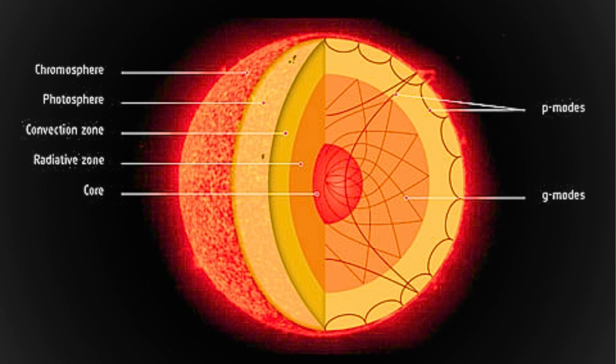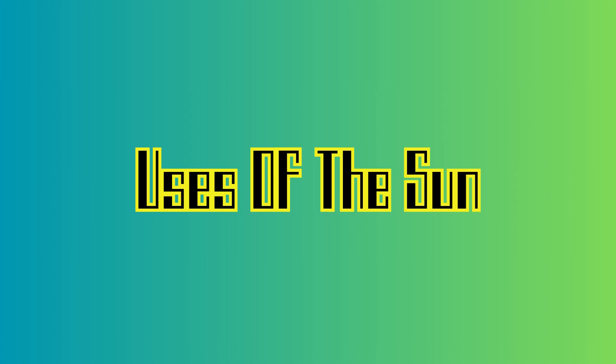The Sun's atmosphere is divided into three layers: the chromosphere, the transition region, and the corona. The corona is the outermost layer and extends from millions of kilometers into space. Uses of the Sun: